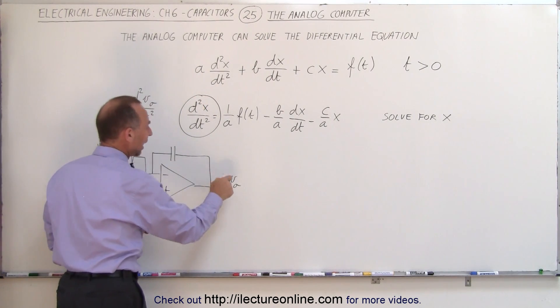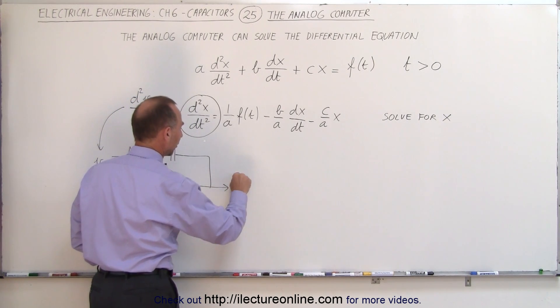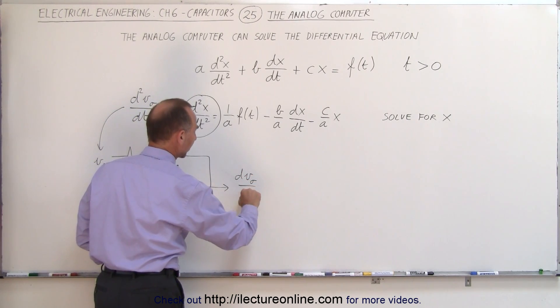We're going to feed that into an integrator. And what we're going to get on the output is we're going to get a first derivative because it integrates only once. So this is the dv_out/dt.